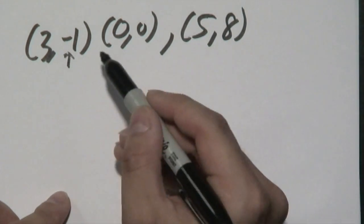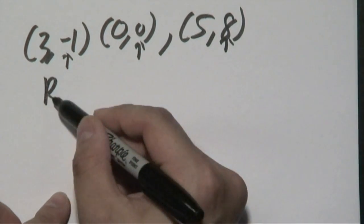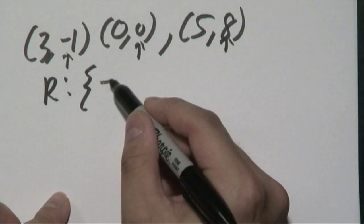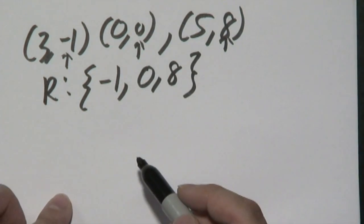As you can tell, -1, 0, and 8 are your Y coordinates. So your range can be thought of as {-1, 0, 8}. It's a set of numbers when it comes to ordered pairs.